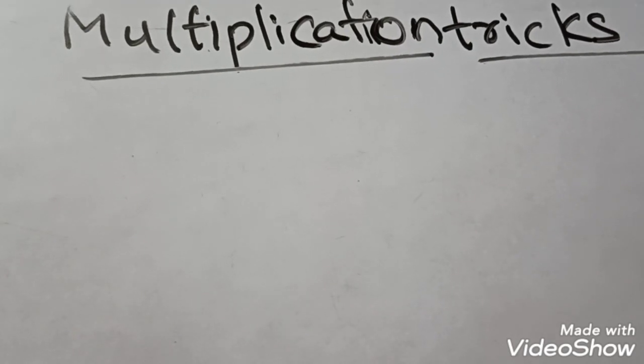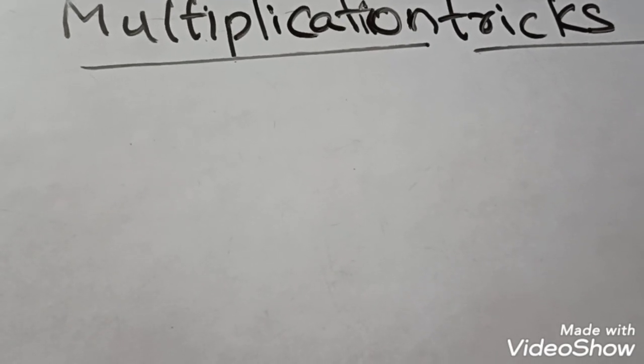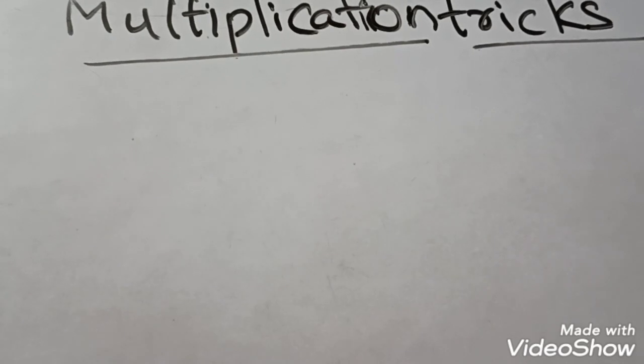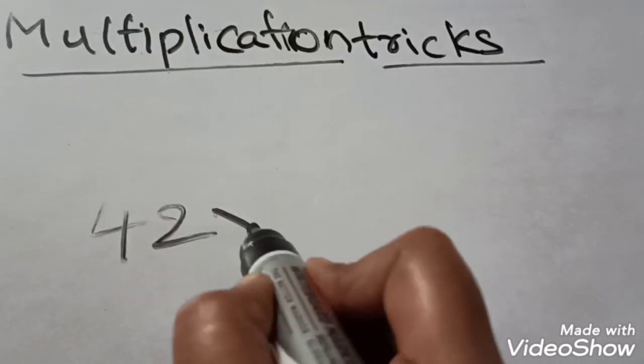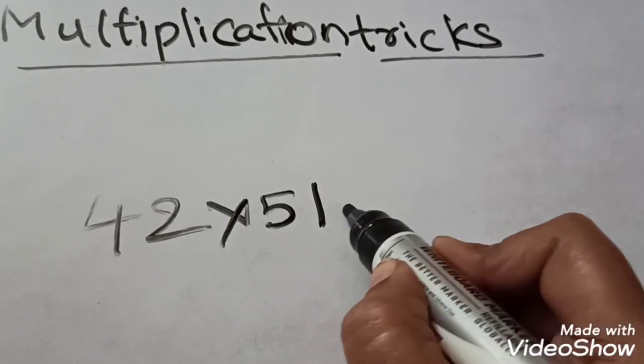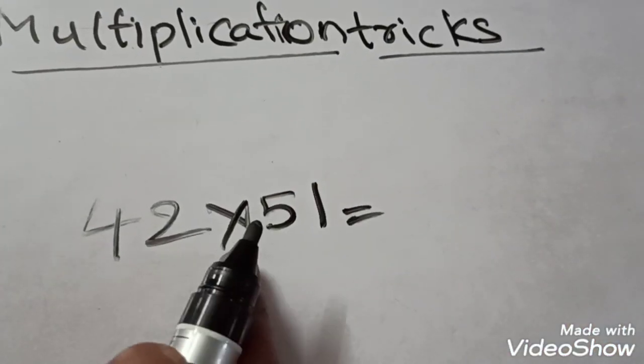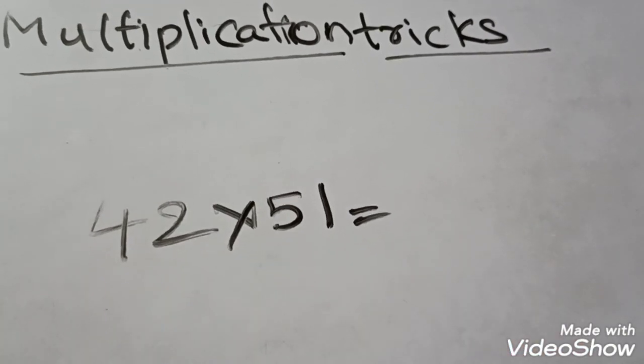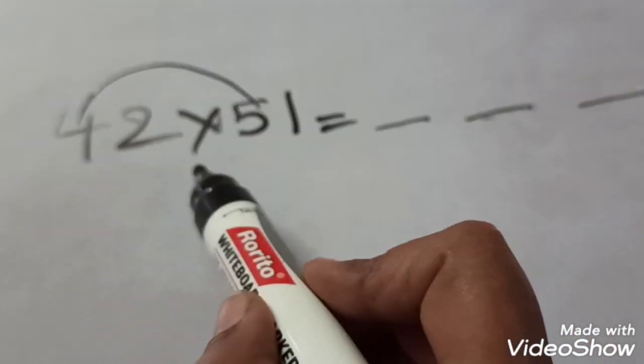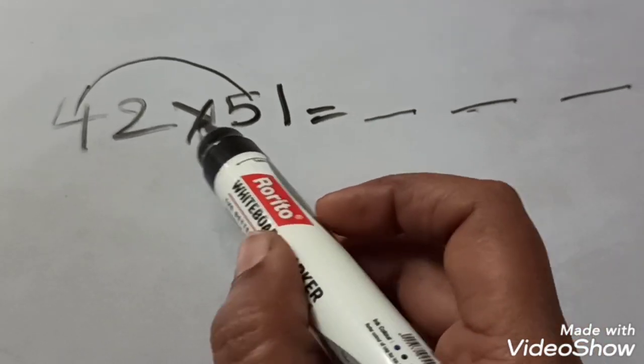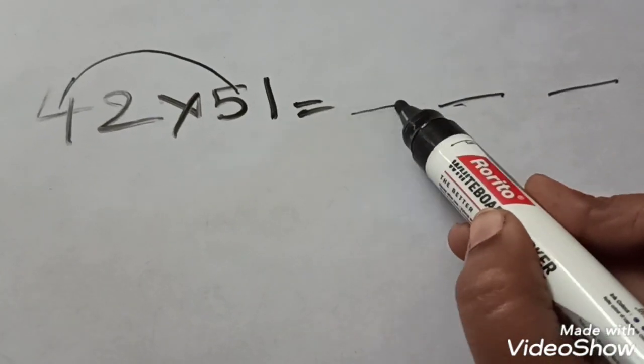Today we will discuss some multiplication tricks in mathematics for two-digit numbers. We can multiply two-digit numbers in three steps. The example problem is 42 into 51. For this sum we should mark three places here.